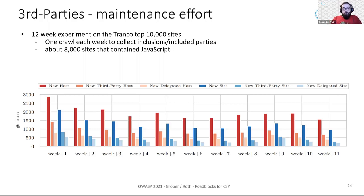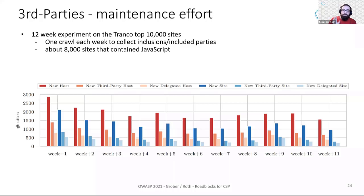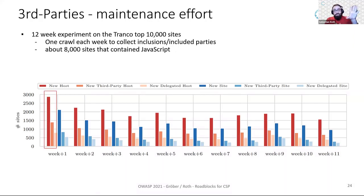In a 12-week experiment conducted on the Tranco top 10,000 websites, Steffens issued a weekly crawl to collect included third parties for each site. Of those 10,000 websites, about 8,000 were dynamic pages containing JavaScript. After the first week, nearly 3,000 new hosts were added, approximately half from third-party inclusions. Even at the end of the 12-week experiment, more than 1,500 new hosts were still being added, making a host-based CSP very hard to maintain.